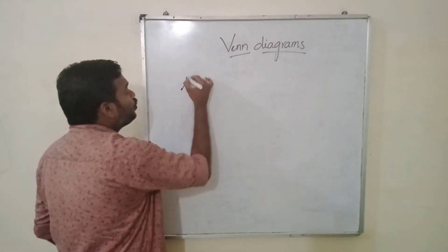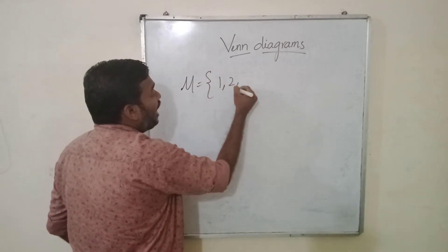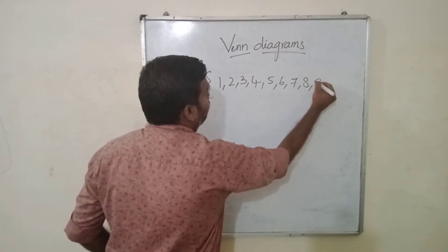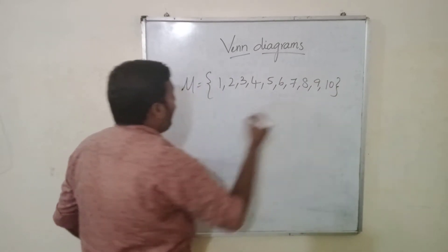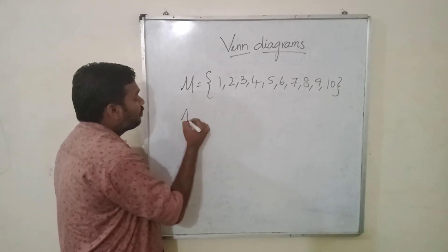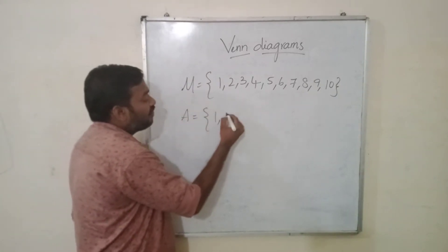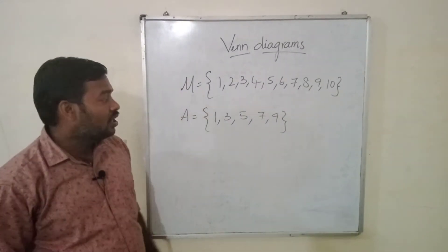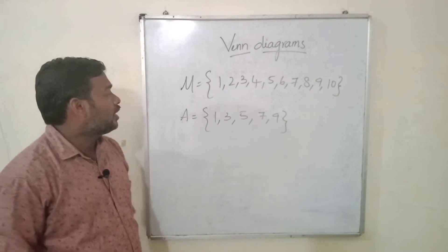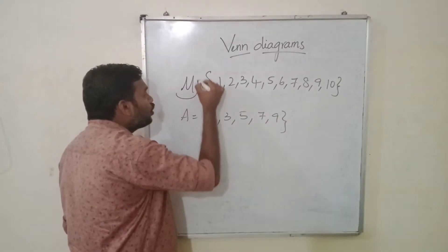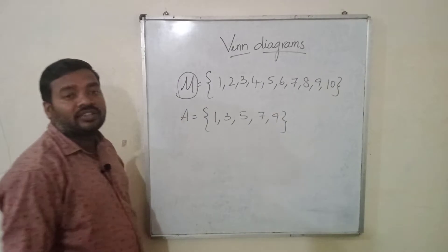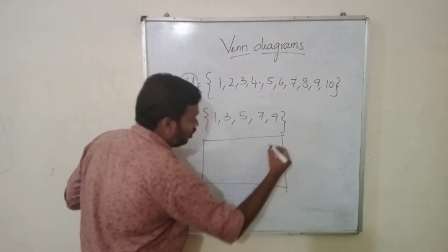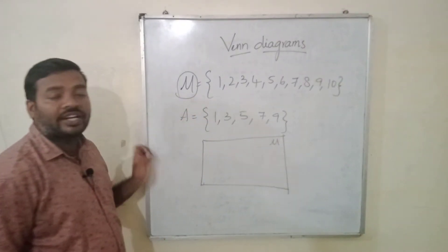Let us take a universal set defined as the natural numbers up to 10. And let us take another set A in which we have 1, 3, 5, 7, 9. These are the odd numbers up to 10. So we are considering universal set as 1 to 10. That means in the universal set we need to draw a square and we have to write 'universal set'.